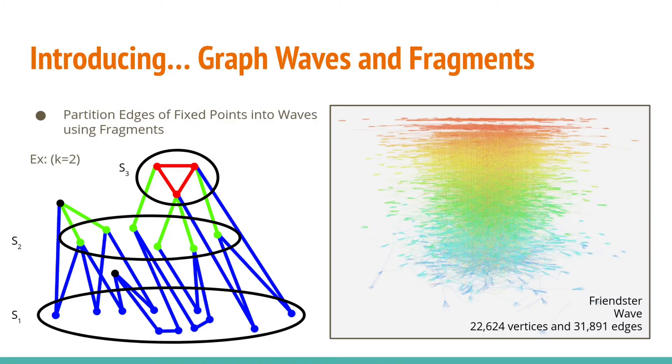Waves are constructed from a sequence of fragments in the following way. Given a fixed point with minimum degree K, we take the vertices of degree K as an initial seed set. In the example on the left, we have a fixed point of minimum degree 2 and the initial seed set is S1 circled here.